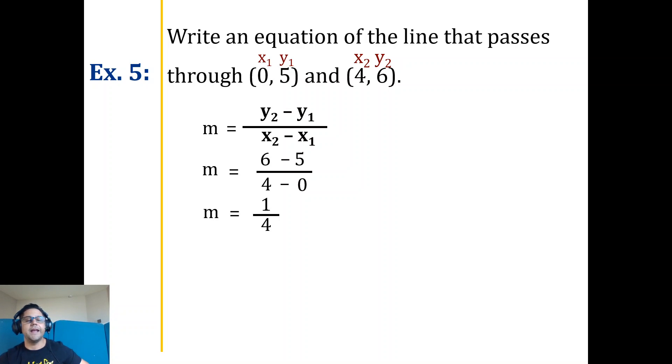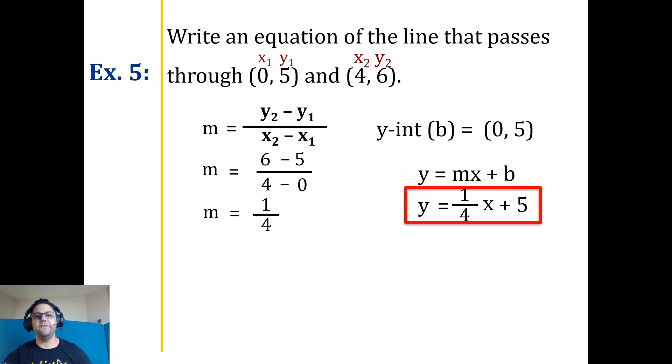Once I have my slope, I identify again. I have my y-intercept, which is the 0, 5. Once I have both points, got my nice equation. So again, it doesn't matter if you have the data, like on example 5, or if you have the graph. You need your slope, and you need your y-intercept.